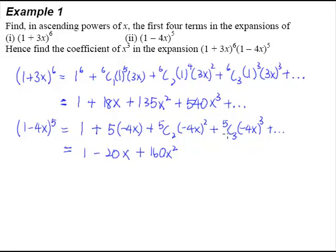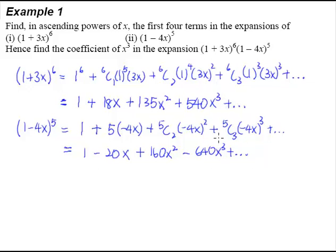Lastly, 5C3 from the calculator is also 10. 4 to the power of 3 is 64, but because it's negative, (-4)^3 is -64. So -64 multiplied by 10 gives us -640x³. This is our answer for the second part — we basically have the answer for both the first and second parts.